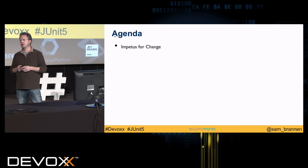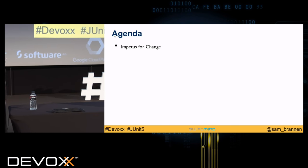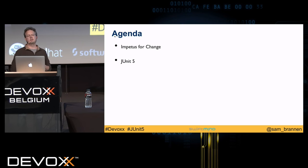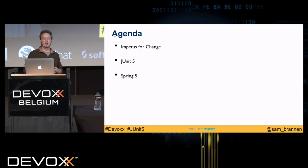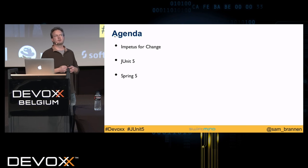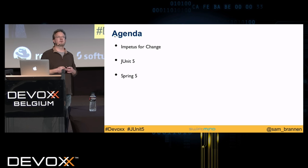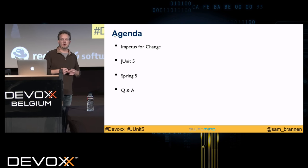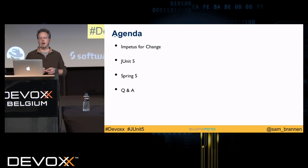The agenda: first we'll talk about the impetus for change — why do we even have JUnit 5? Then we'll look at JUnit 5 in great detail, or at least as much as we can within this talk. At the end I'll cover some features of Spring 5 and its support for JUnit 5, so you can see how other frameworks can build off the new features. Hopefully there'll be a few minutes left for Q&A, and if not, you can approach me afterwards.